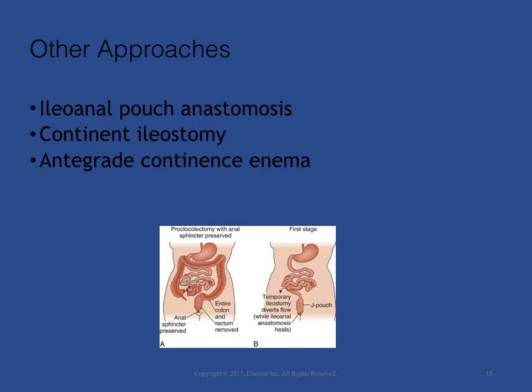The antegrade continent enema procedure is usually done in children with fecal soiling associated with neuropathic or structural abnormalities of the anal sphincter. A continent valve with an opening on the abdomen is surgically created so that the patient or caregiver can insert a tube and give an enema, which comes out through the anus. Colonic evacuation begins about 10 to 20 minutes after the patient receives the enema fluid.